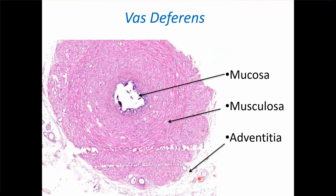Again, vas deferens. The mucosa is pseudostratified columnar epithelium with stereocilia. There are three layers of muscle: inner and outer longitudinal, middle circular, and the outermost is adventitia.